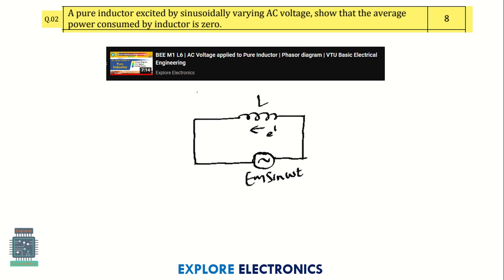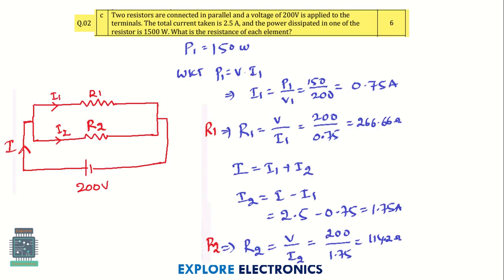For the pure inductor question, we need to derive that the average power consumed by the inductor is zero. You need to write the circuit, the phasor diagram, and finally show that average power consumed by the inductor is zero. There is a video for that in the basic electrical playlist you can go through.